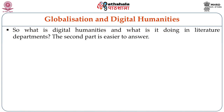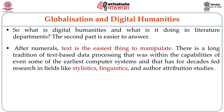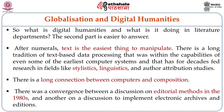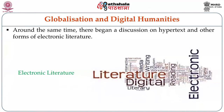So what is DH and what is it doing in literature departments? The second part is easier to answer. First, after numerals, text is the easiest thing to manipulate — there is a long tradition of text-based data processing feeding research in fields like stylistics, linguistics, and author attribution studies. Second, there is a long connection between computers and composition. Third, there was a convergence between editorial methods discussions in the 1980s and discussions on electronic archives and editions. Fourth, around the same time began a discussion on hypertext and other forms of electronic literature. Fifth, the shift of literature departments to culture studies made them open to computers as central artifacts.